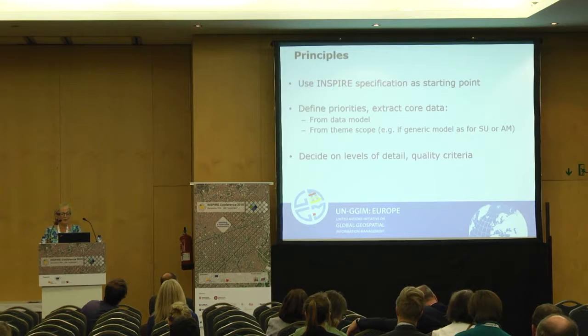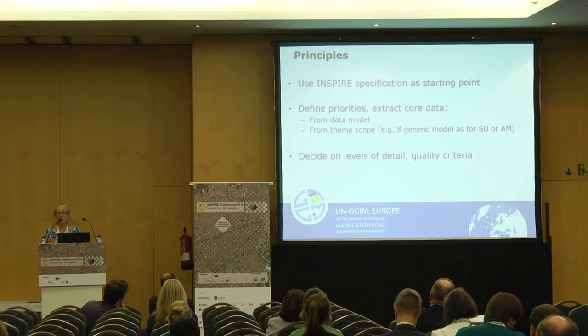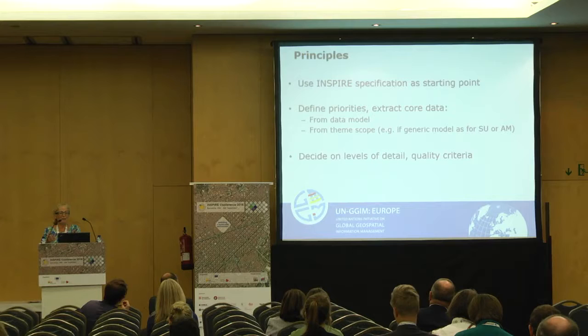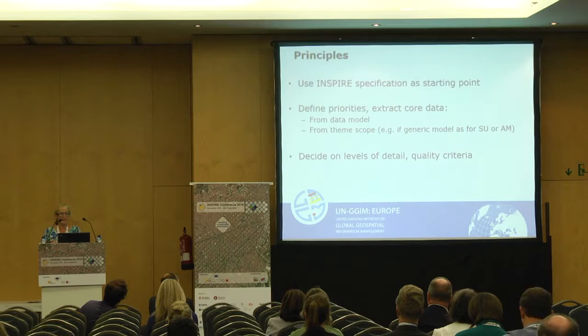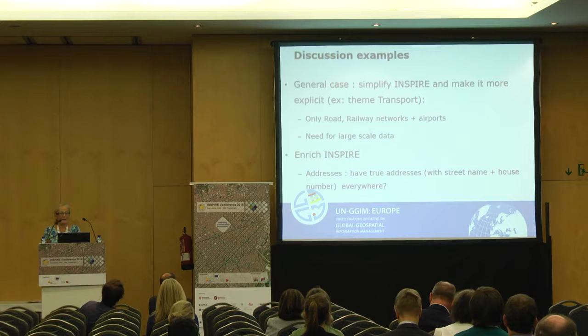Our principles: we use INSPIRE specifications as a starting point and try to define priorities to extract core data. For the data model we try to find the most useful feature types and attributes. Sometimes we also need to clarify scope — for instance, themes as generic as statistical units or area management may require priorities in scope rather than just in the model. We also need to decide which levels of detail are most relevant and most required, and what the main quality criteria and rules required by users are.